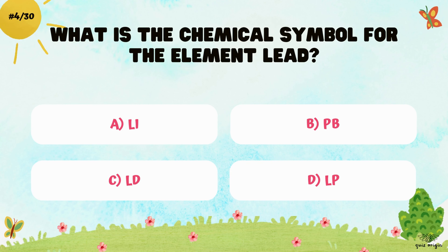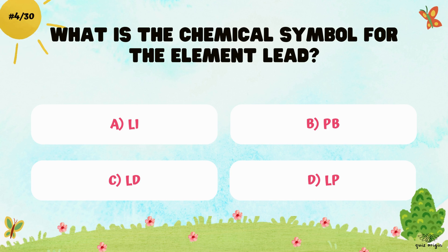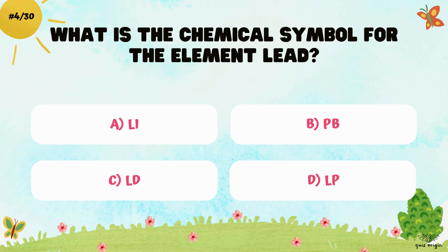What is the chemical symbol for the element lead? A. Li, B. Pb, C. Ld, and D. Lp.